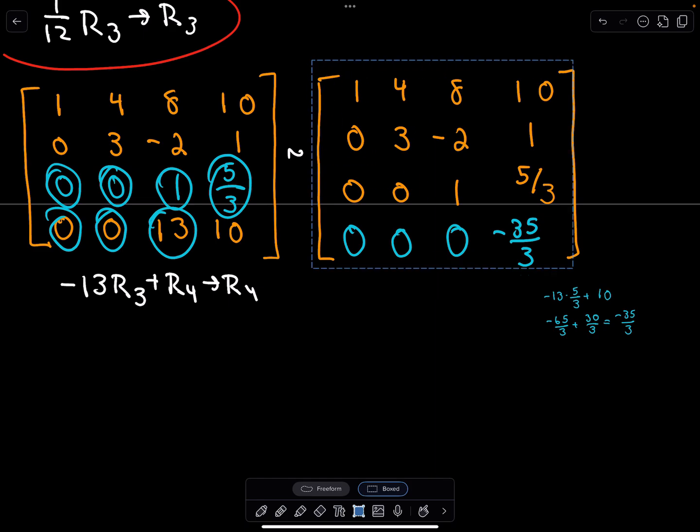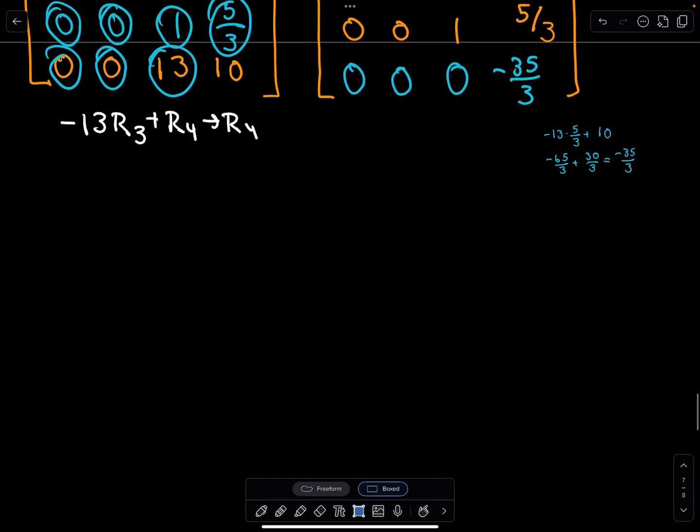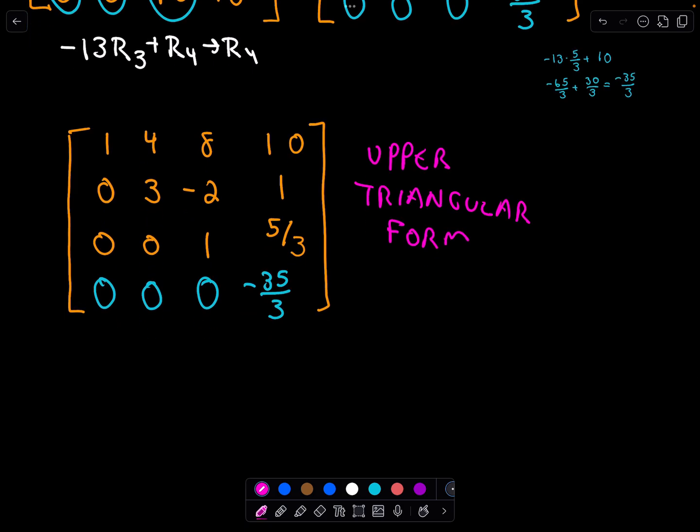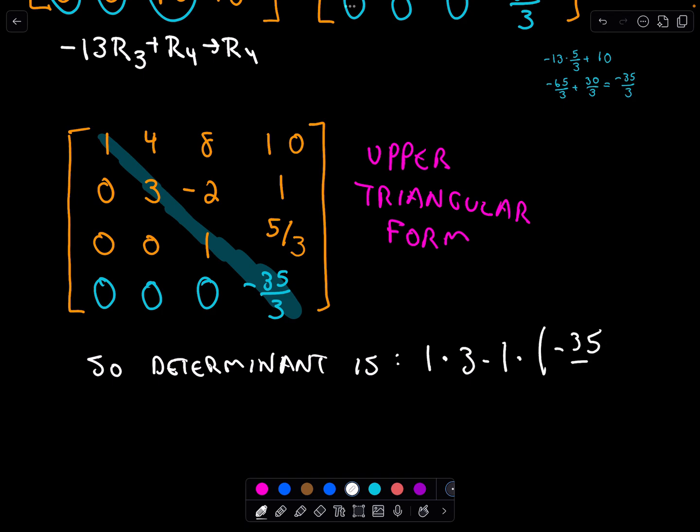Now we're almost done, because we now have it in this upper triangular form, and that's good. We do have it in triangular form. Now simply define the determinant of this matrix. Of this matrix, it's not going to be the original one, because we're going to have to modify it. I would just take those elements and multiply them. So 1 times 3 times 1 times -35/3. This one after the row operations has a determinant of -35.